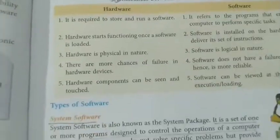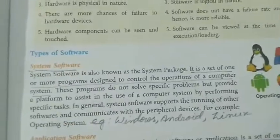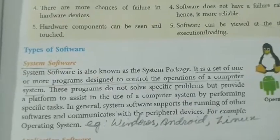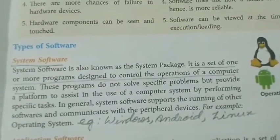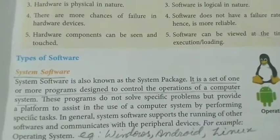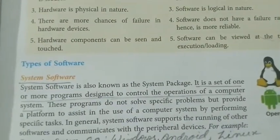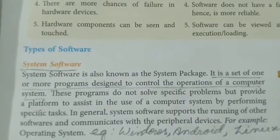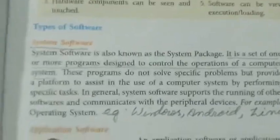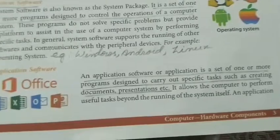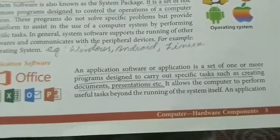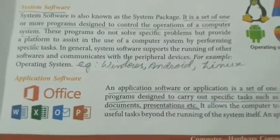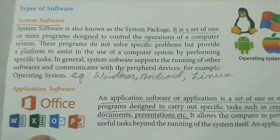Now we'll look at the types of software. First is system software — examples include Windows, Android, and Linux. It is a set of one or more programs designed to control the operation of a computer system, taking care of both hardware and software. Application software, such as MS Word and MS Excel, is purely designed for the user to help perform different jobs.